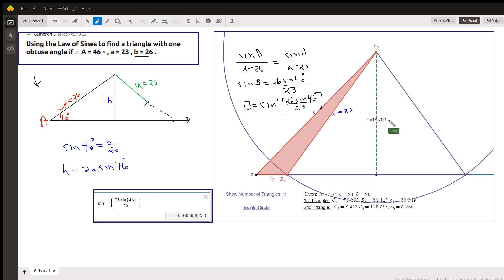So since this 23 is longer than h, it's going to reach this side because it's longer than the altitude. But if I picture swinging it around this way, it will also hit here because it's less than 26. If it was longer than 26, like 28...